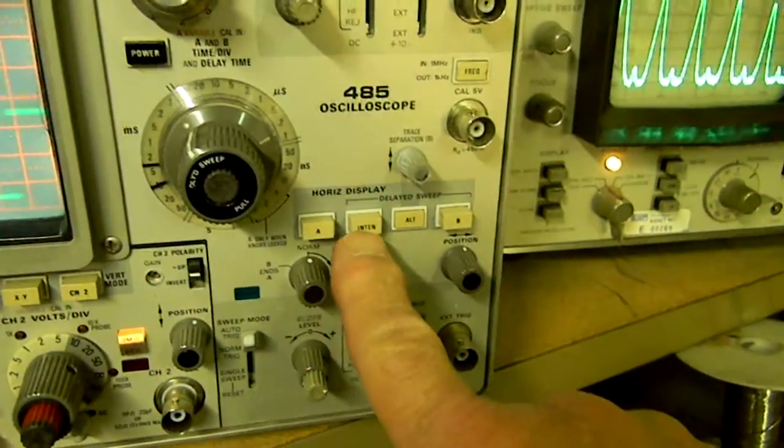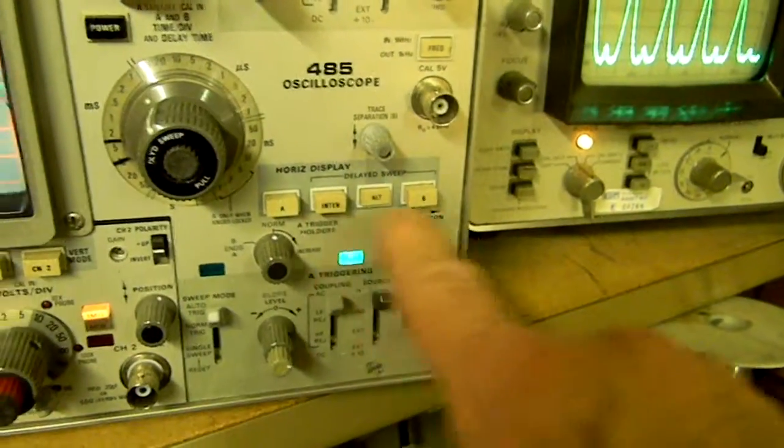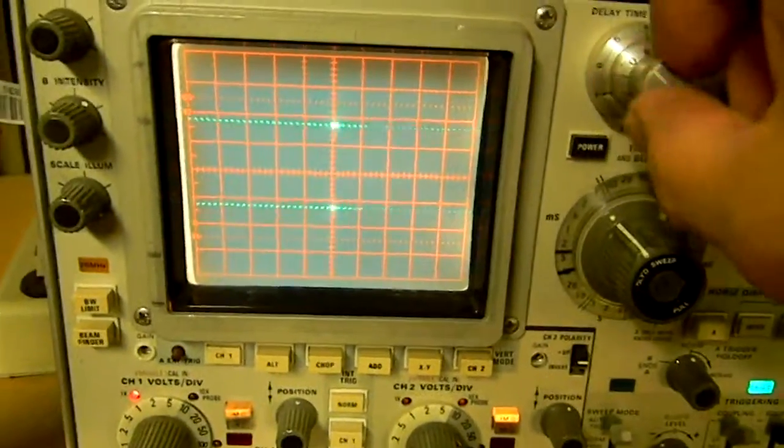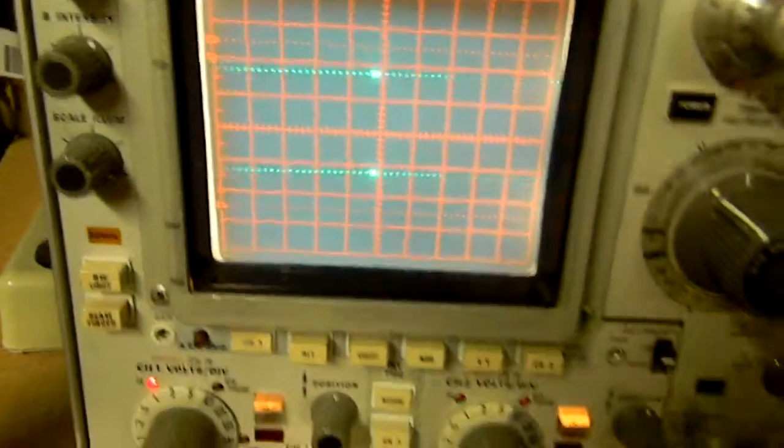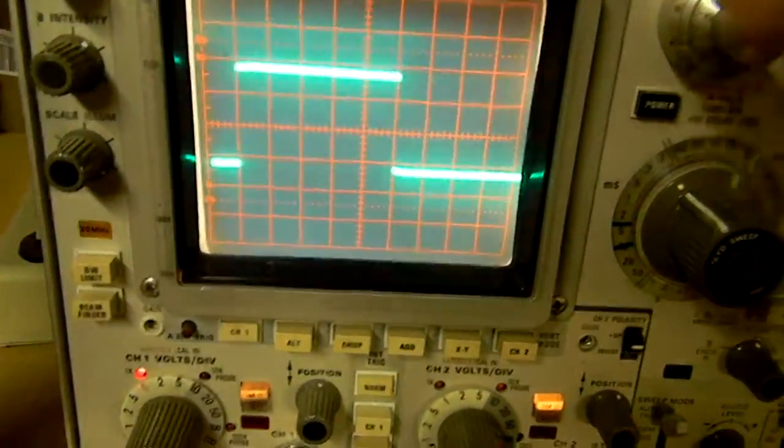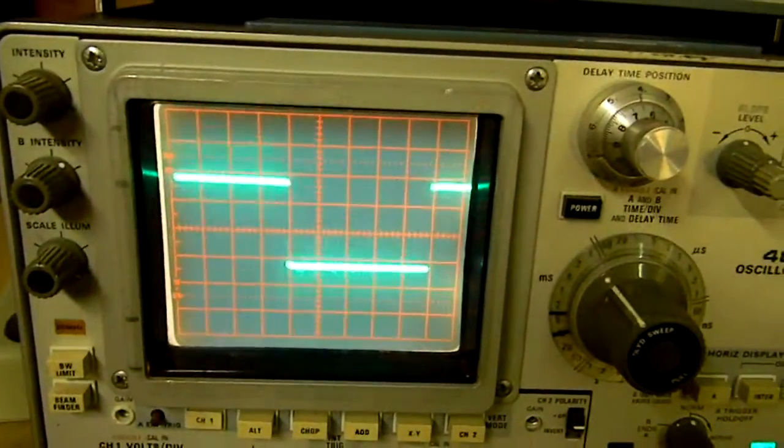Delayed sweep B, intensified and the alternate. There's the intensified again. We move it along. There's the delayed. That's the one I always used. And what we would end up finding out is that there would be a bad spot, is what it was called, somewhere in the track and there would be a dropout.